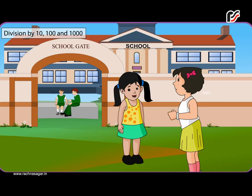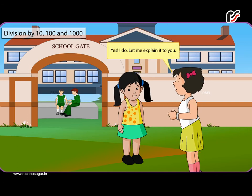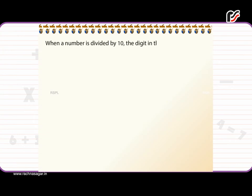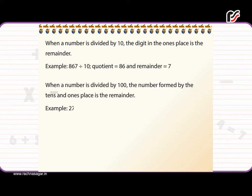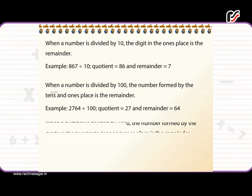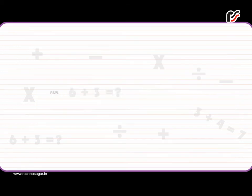Zero divided by any number gives 0 as the quotient. Division by 10, 100, and 1,000 is very easy. When a number is divided by 10, the digit in the ones place is the remainder. Example: 867 divided by 10 — quotient is 86 and remainder is 7. When a number is divided by 100, the number formed by the tens and ones place is the remainder. Example: 2,764 divided by 100 — quotient is 27 and remainder is 64. When a number is divided by 1,000, the number formed by the digits in the hundreds, tens, and ones place is the remainder. Example: 7,456 divided by 1,000 — quotient is 7 and remainder is 456.